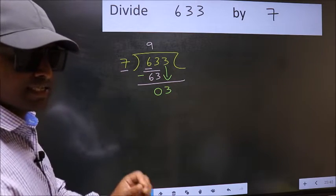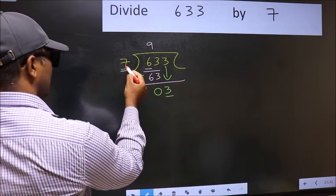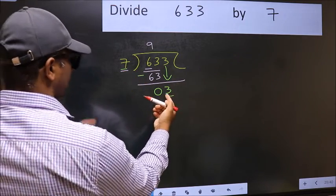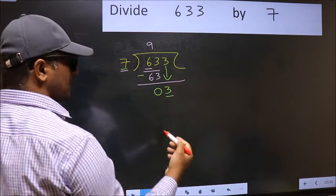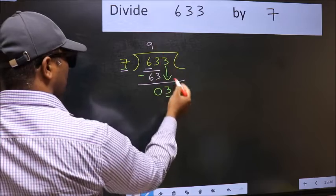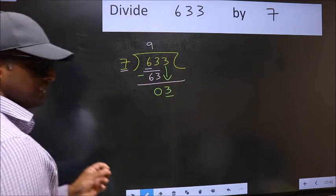And the mistake is this. Here we have 3 and here 7. 3 is smaller than 7, so what many do is they directly put dot and take 0, which is wrong.